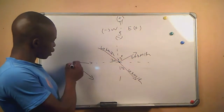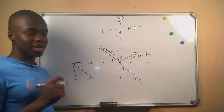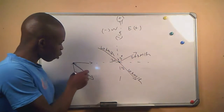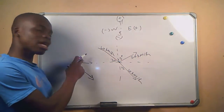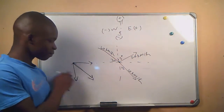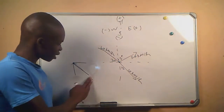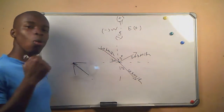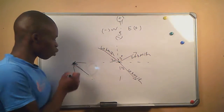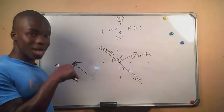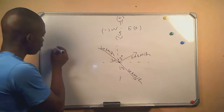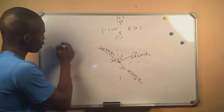The way we determine the directions of the components is: if the original velocity is pointing away from the reference point, the horizontal and vertical components will also point away from that point. But if the original velocity is pointing towards the point, both the horizontal and vertical components will also point towards the point. To solve this kind of problem, we first calculate the sum of the horizontal components and the sum of the vertical components.